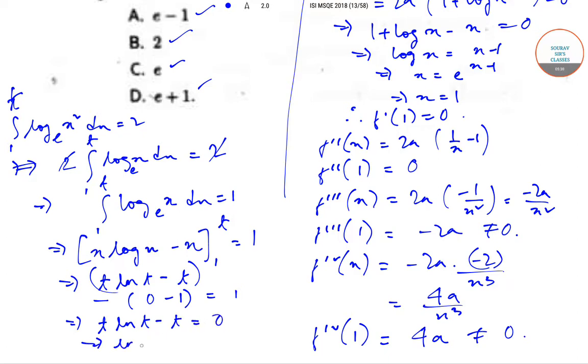From t·ln(t) − t = 0, we get ln(t) = 1, which gives t = e. Therefore option C is the correct option.